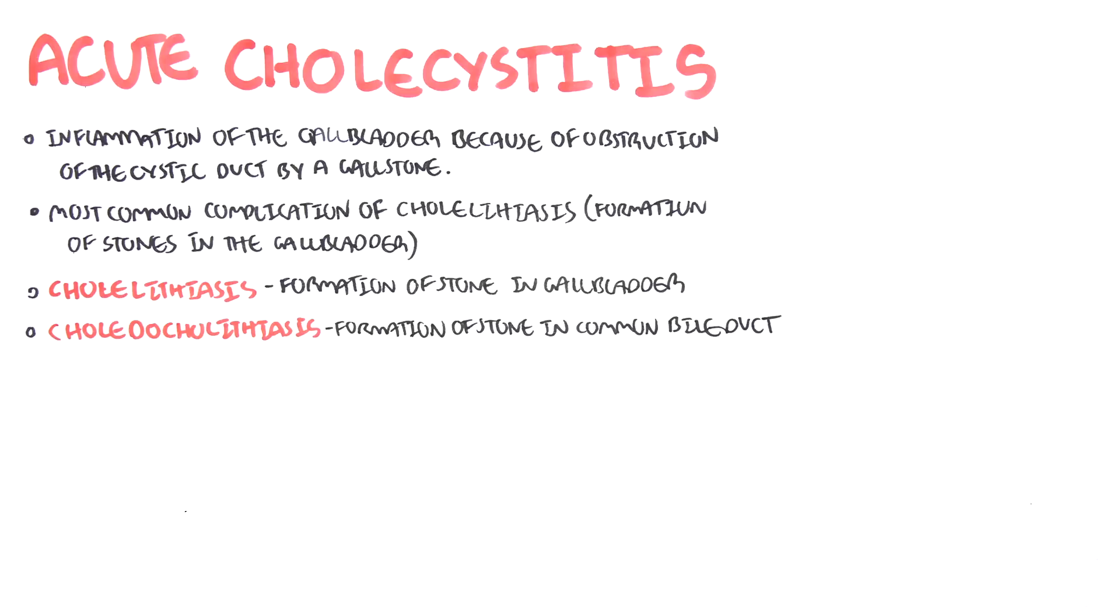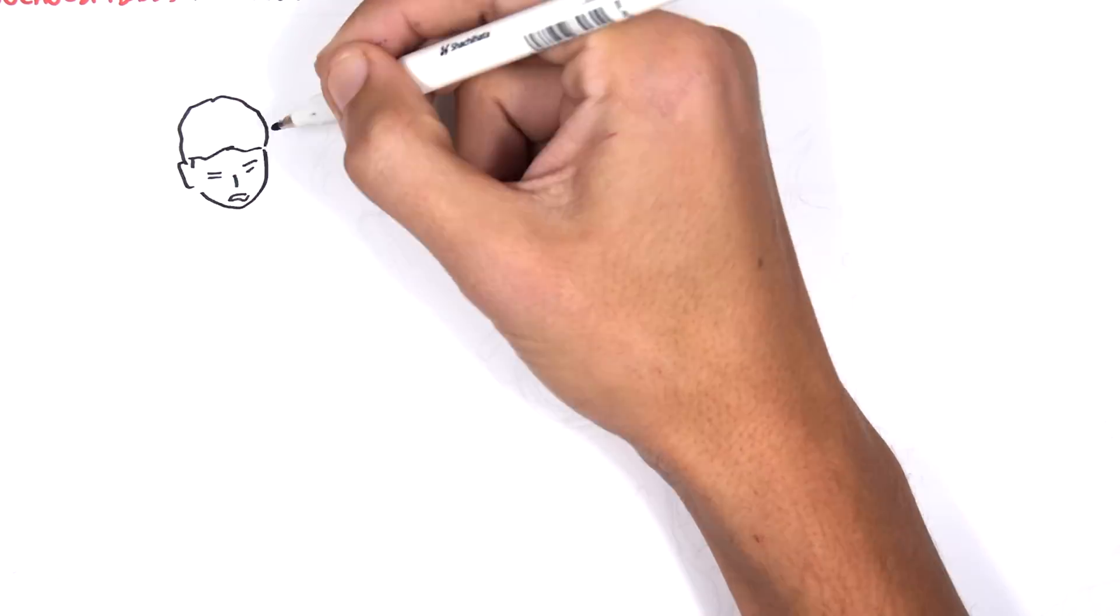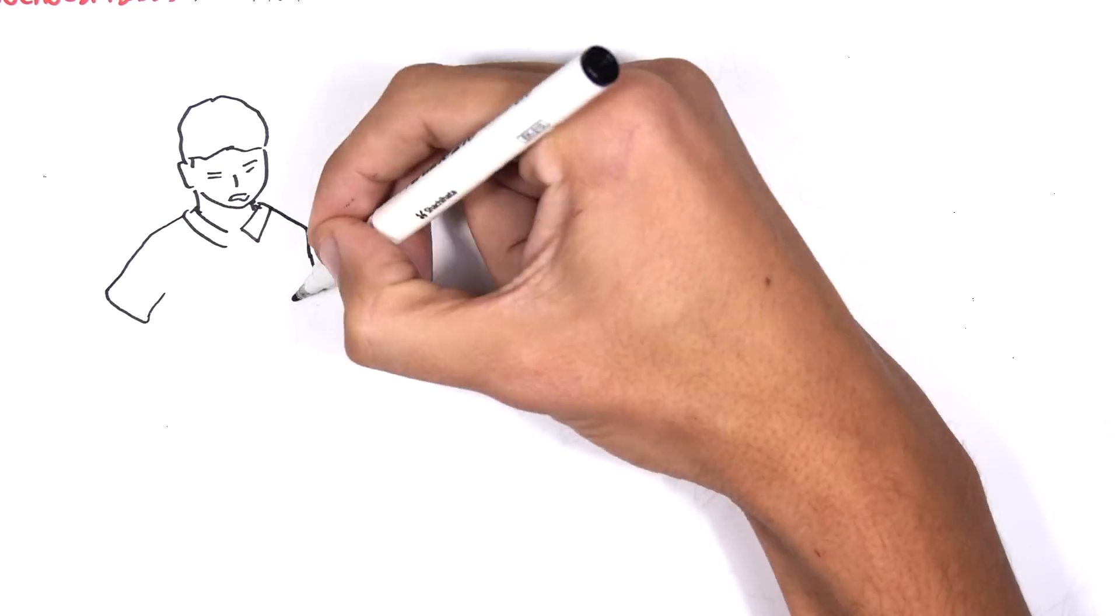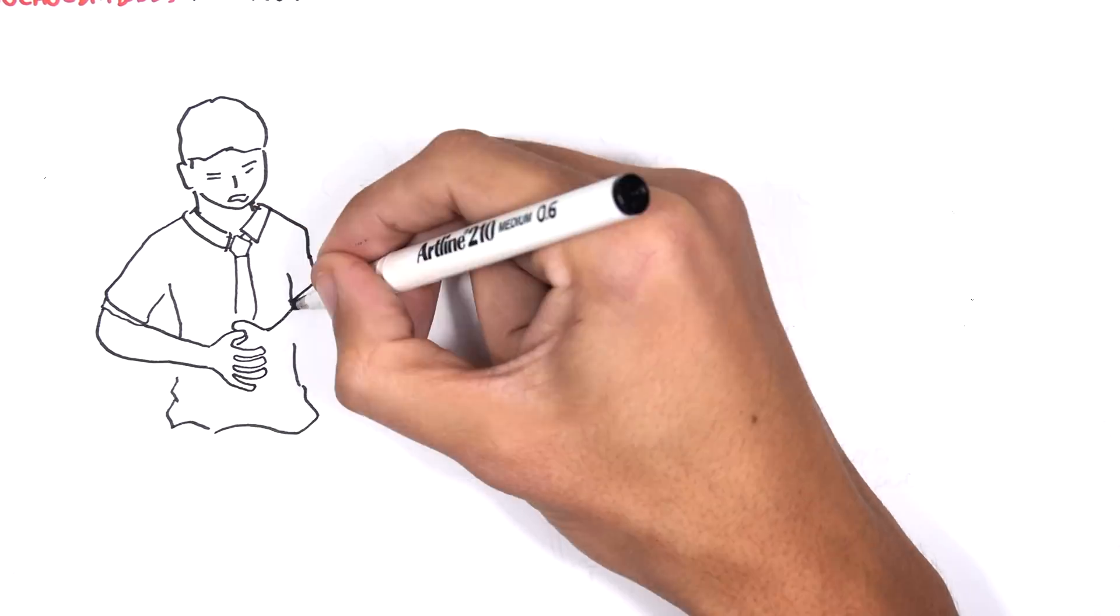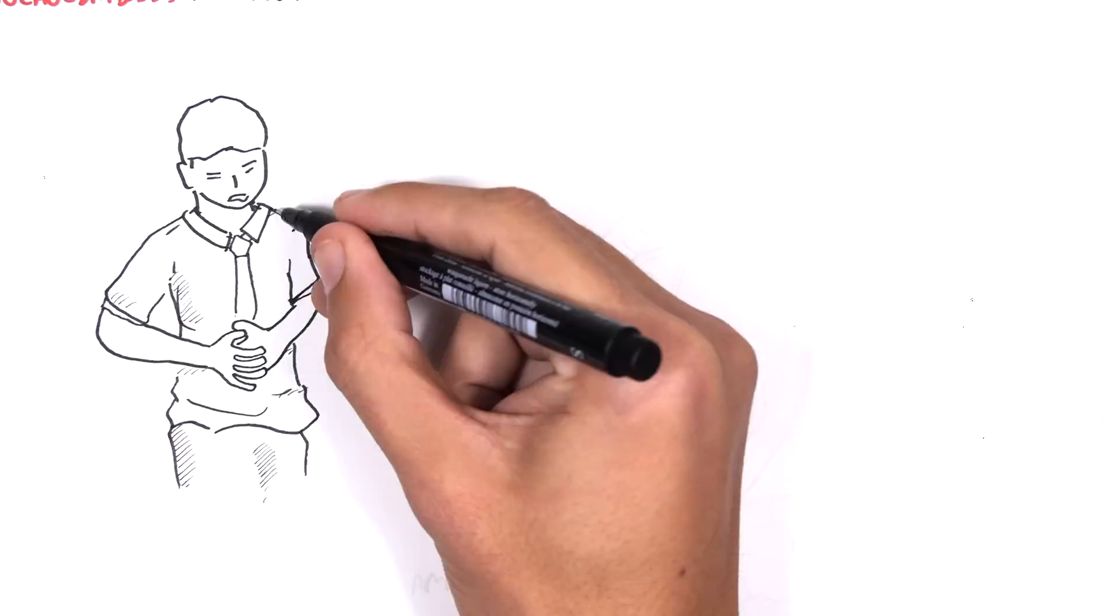In this video, we will mainly focus on acute cholecystitis, but really, we will also talk about every other complication, and hopefully, we can get our head around it together. Here is a guy with right upper quadrant pain of the abdomen.